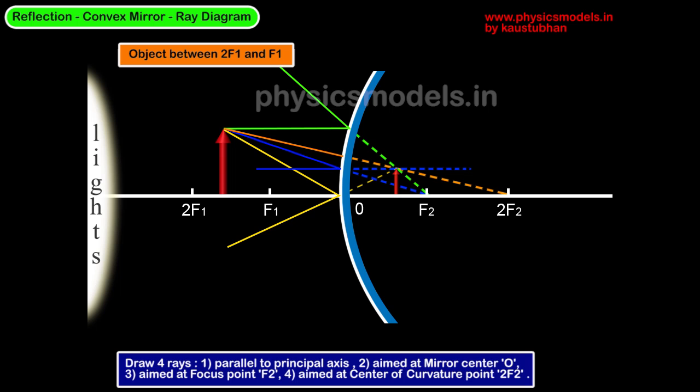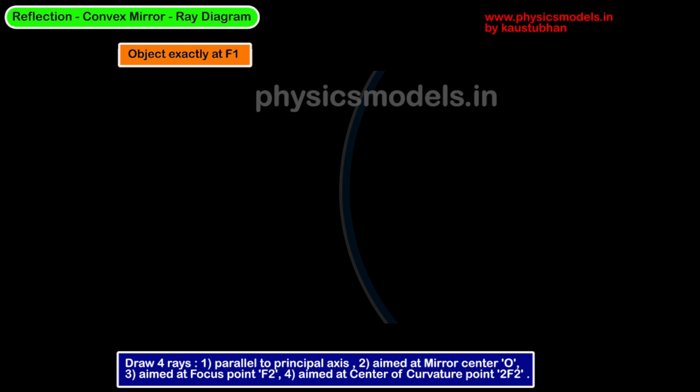When you extend these rays back, you get your image, which is virtual, erect, and diminished in size. We have covered the three parameters required for an image. It's really quite simple.